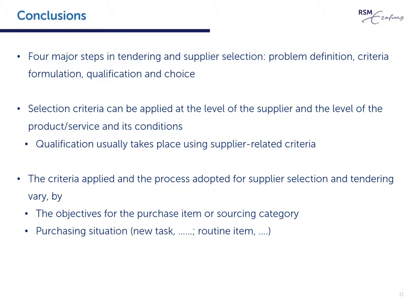In conclusion, we can summarize the takeaways from this e-lecture on supplier selection as follows. First, four major steps in tendering and supplier selection can be defined: problem definition, criteria formulation, qualification, and choice. Second, selection criteria can be applied at the level of the supplier and the level of the product, service, and its conditions — and qualification usually takes place using supplier-related criteria. Third, the criteria applied and the process adopted vary by the objectives for the purchase item or sourcing category, and by the purchasing situation — classified in terms of new task, modified rebuy, and straight rebuy, or classified in terms of the purchasing portfolio such as proposed by Kralic: routine items, leverage items, etc.